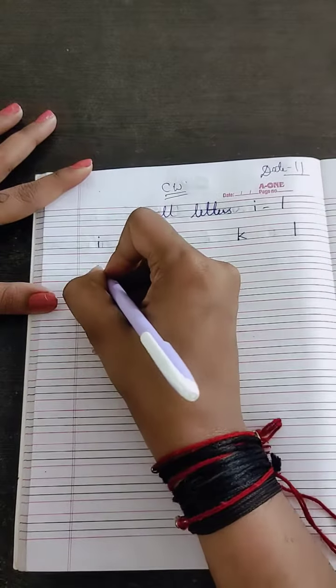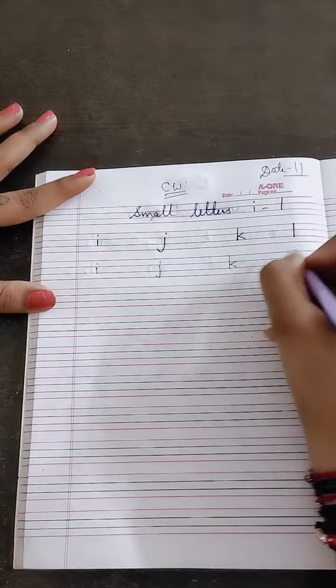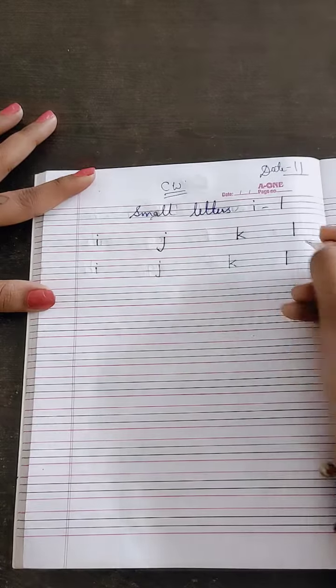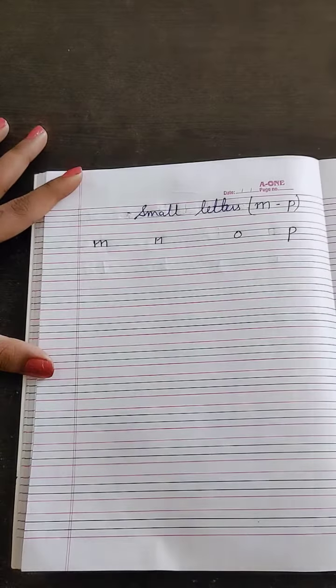Now you have to write I for ice cream, J for joker, K for kite, L for lion and then M for monkey.